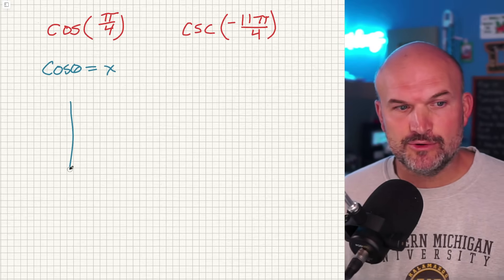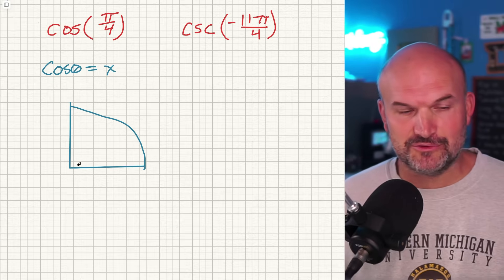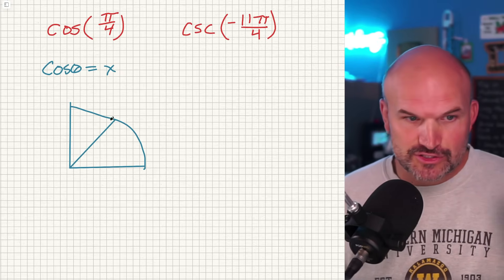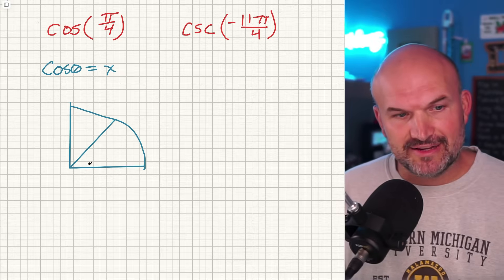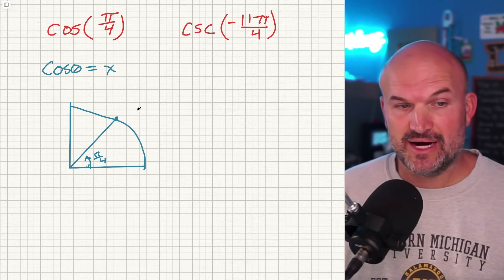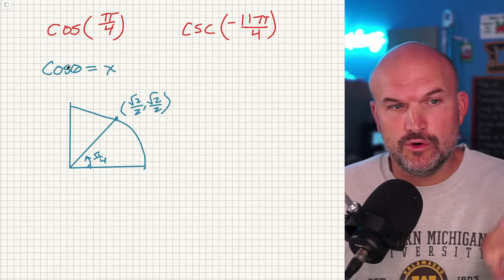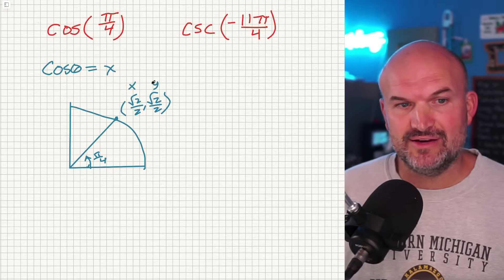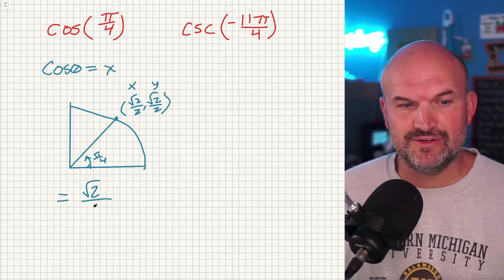I'm not going to go through the whole unit circle because we know that π/4 is in the first quadrant. If you memorize the first quadrant — which I tell all my students to do — the coordinate point on the unit circle for the angle π/4 is (√2/2, √2/2). Per the definition, the cosine of π/4 equals the x-coordinate of that point, so our answer is √2/2.